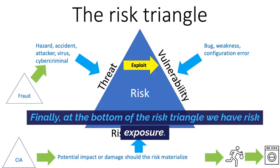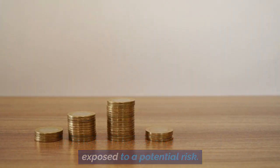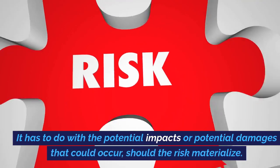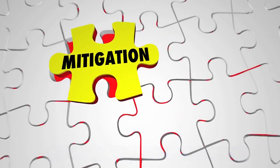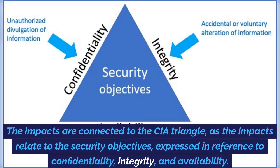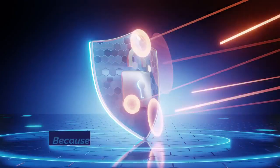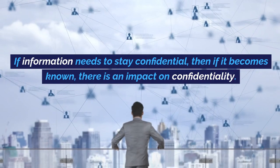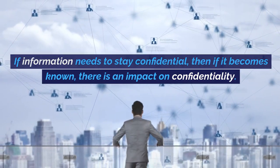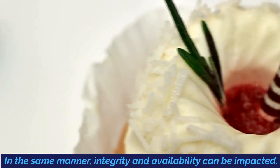Finally, at the bottom of the risk triangle we have risk exposure. This refers to how an organization is exposed to a potential risk — it has to do with the potential impacts or damages that could occur should the risk materialize. The impacts are connected to the CIA triangle, as they relate to the security objectives expressed in reference to confidentiality, integrity, and availability. An impact is a negation of these security objectives: if information needs to stay confidential and it becomes known, there is an impact on confidentiality. In the same manner, integrity and availability can be impacted.